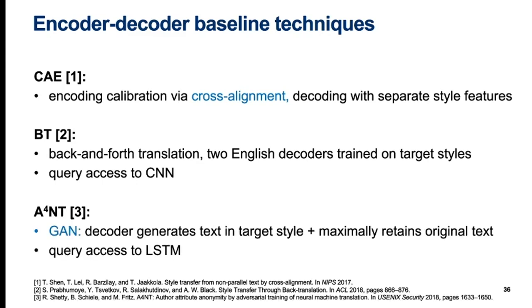A4NT is a generative adversarial network, or GAN, that trains a decoder to generate text in the target style while at the same time training a classifier to correctly detect the style from the decoded text. It also includes a reconstruction loss from the original text that results in minimizing changes to the original to only those that are relevant for the style transfer. As the classifier architecture it uses an LSTM, which we also use as one of our author profilers prior to the GAN training.